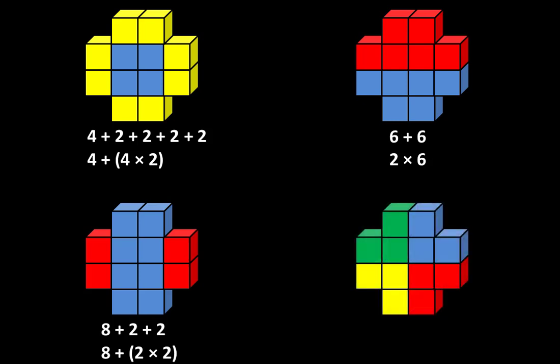The fourth structure can be described as three plus three plus three plus three, or it can be described as four groups of three. In every case, the total is 12.